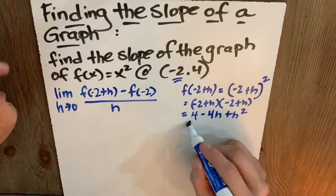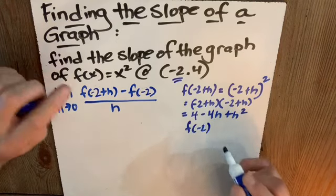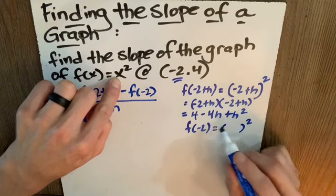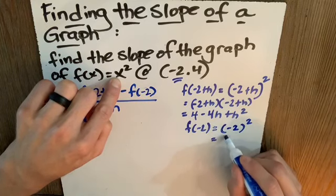How about f of negative 2? We need to know that as well. f of negative 2 is we're going to take our input and square it. So it says take whatever your input is and square it. And so that's going to give us 4.